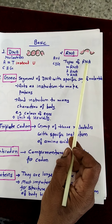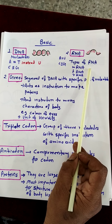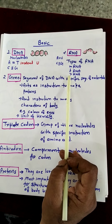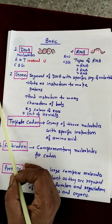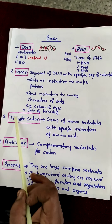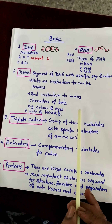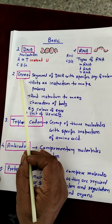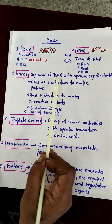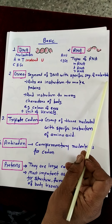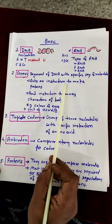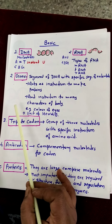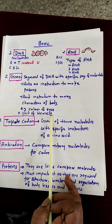There are three types of RNA: mRNA, which is messenger RNA and carries message from the DNA, tRNA, and rRNA. Then there is new terminology to see in this topic. What is a gene? It is the segment of DNA with a specific sequence of nucleotides. It acts as an instruction to make proteins and instruction for many characters of the body. This gene is also called the unit of heredity.